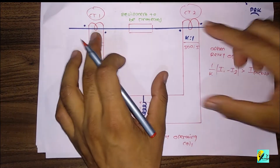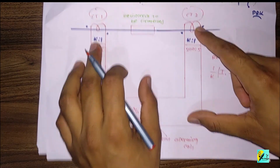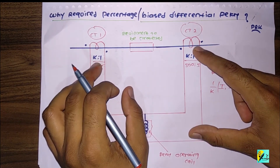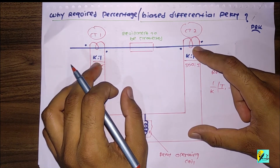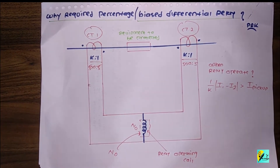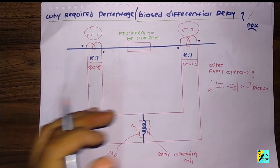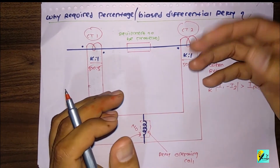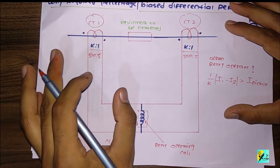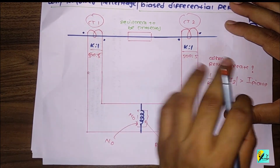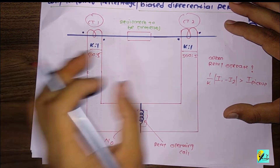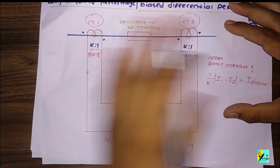If these two transformation ratios of the two CTs are not equal and identical, then the secondary currents will not be equal obviously. So if there is no fault, I1 should equal I2, but their secondary currents will not be equal if the transformation ratios are not equal.